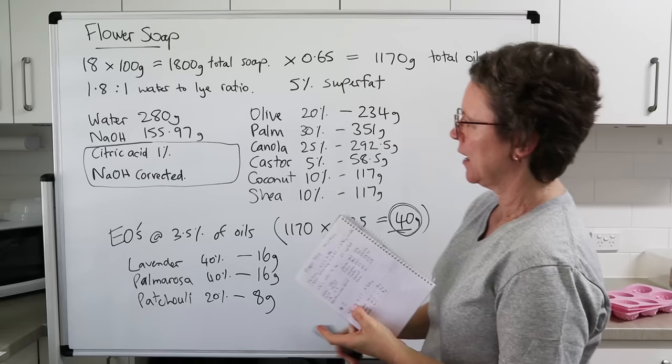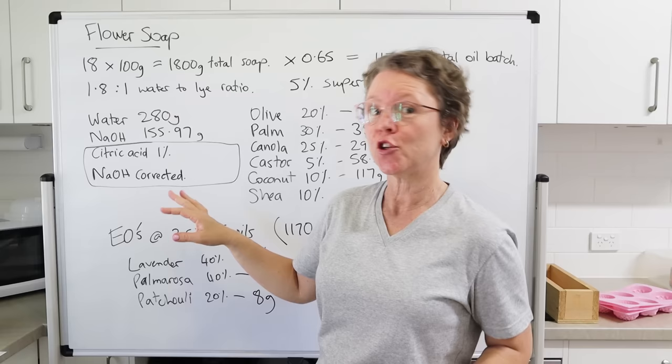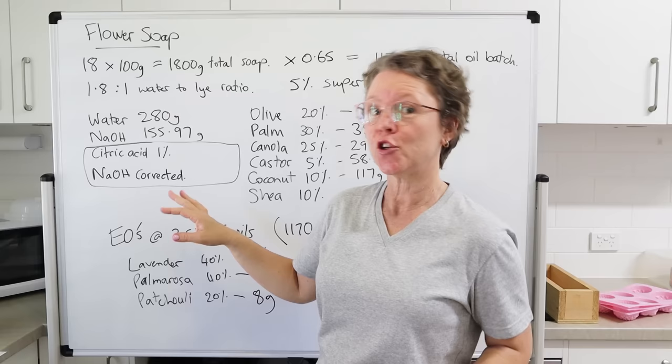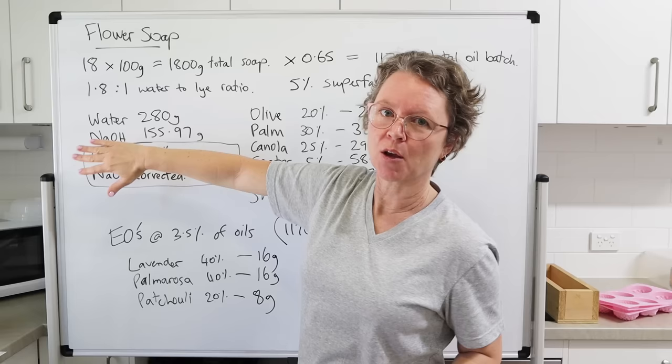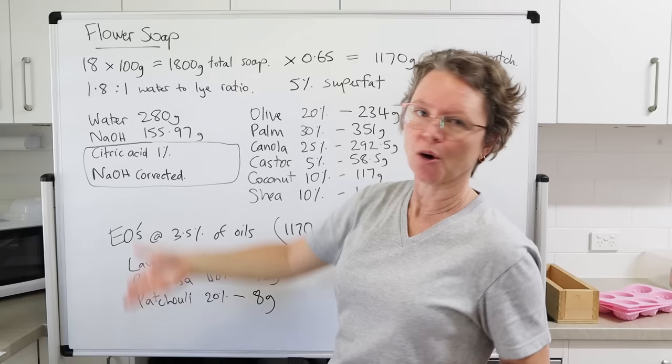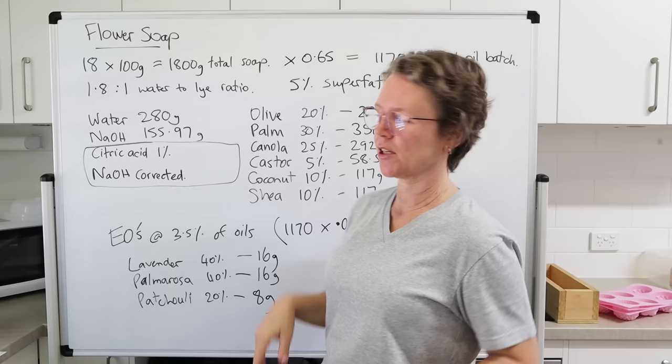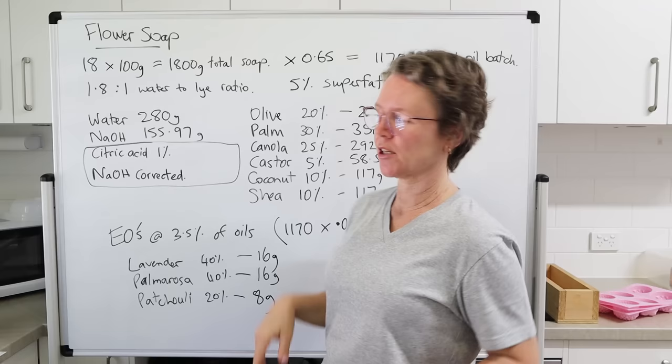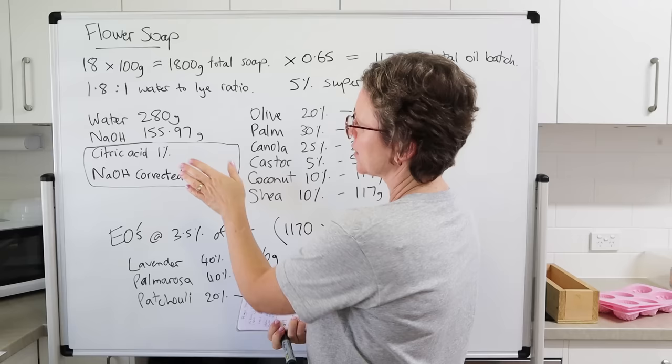Last but not least — the citric acid. If you don't want to use citric acid, you don't have to — just leave this bit out. It's completely unnecessary if you don't want it. If you've got hard water or you're using old oils, I recommend it. But it's not necessary — I made my soap for years and years without it, and I still make a lot of my soap without it. There are just certain times that it's useful.